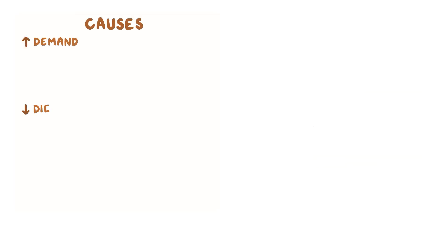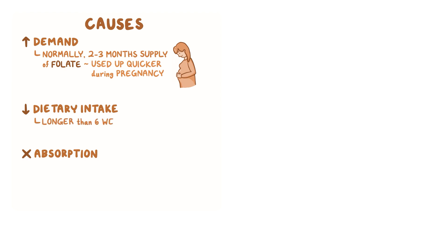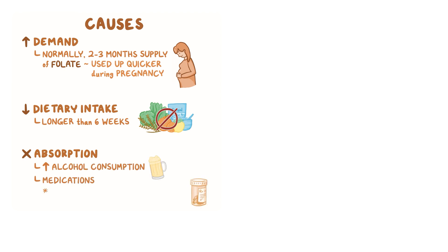Folate deficiency can result because of increased demand, decreased dietary intake, or impaired absorption. Normally, we have up to 2-3 months' supply of folate in the body, but this can get used up even quicker during pregnancy due to the increased need for it. Generally, people who get folate deficiency are either pregnant or have had an extremely restricted diet for longer than 6 weeks. Besides this, excessive alcohol consumption and medications like phenytoin, trimethoprim, sulfasalazine, and methotrexate often interfere with folic acid absorption from the jejunum.